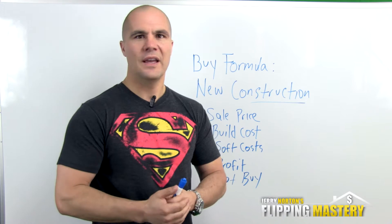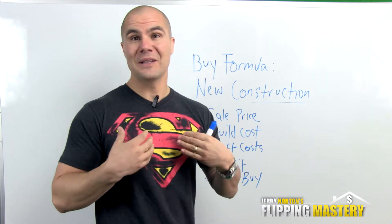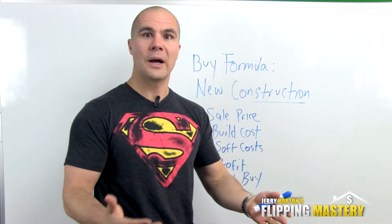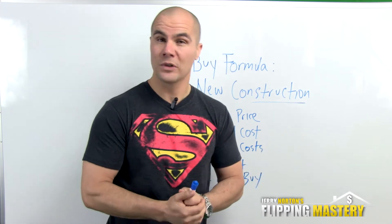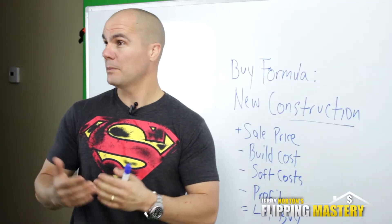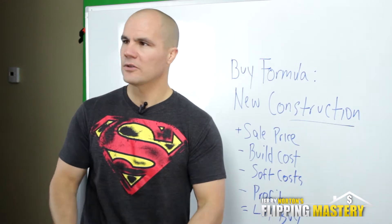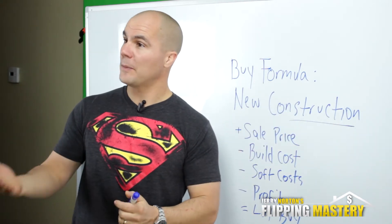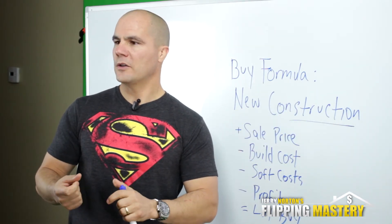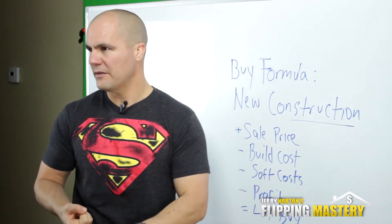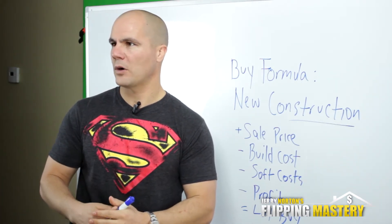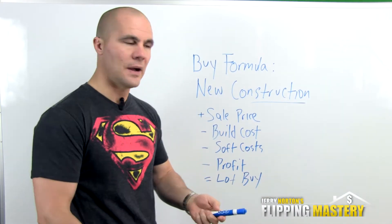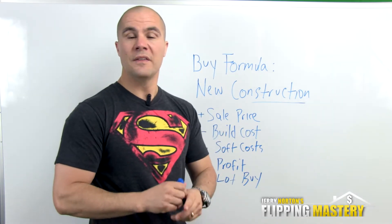This is a great opportunity to flip houses by buying a lot, building a house, and selling it — a phenomenal way to make really good money on quick-turn deals. What I want to focus on here is the buy formula. Just like with flipping houses, where we have a buy formula that considers renovations to figure out what you should buy a house for — I call it the 65% formula — with new construction we do a similar process.